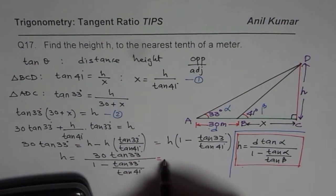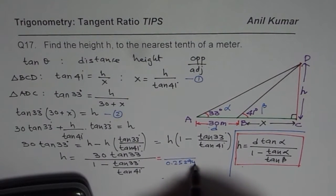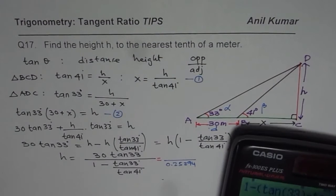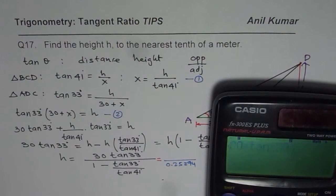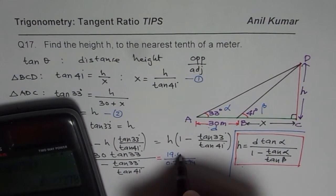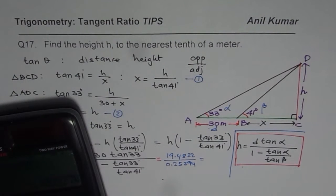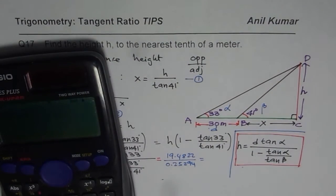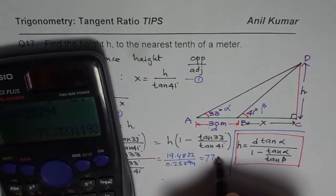And the numerator is 30 times tan 33°, which is 19.4822. Now we will divide numerator by denominator: 19.4822 divided by 0.25294 equals 77.02.